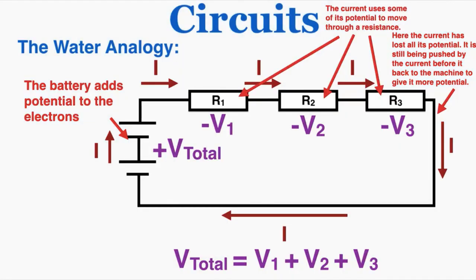So that's the basics of how a circuit works. A battery provides electric potential or voltage, current moves through the circuit with that potential, and it loses that potential as it goes through each resistor — doing some work in the resistor — until it has no potential left and returns to the battery to be given that same amount of potential again. That process then repeats. We're going to be doing a lot with circuits, but that's the basic physical idea of what's actually going on inside of them.